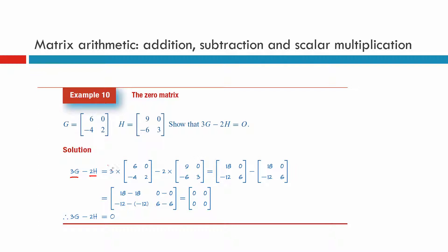So when we do three times the first one, we get three sixes are 18. Three zeros, zero. Three times negative four, negative 12. Three times the two is six. You can leave it as a negative. And then you times the second matrix by the two. Two times the nine, 18. Two times the zero, zero. Two times the negative six, negative 12. And two times three is six. We've kept the minus outside. So now we take the two away.